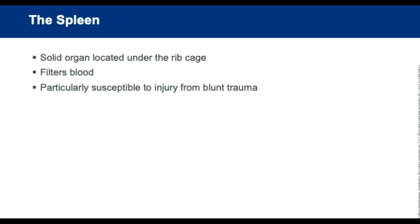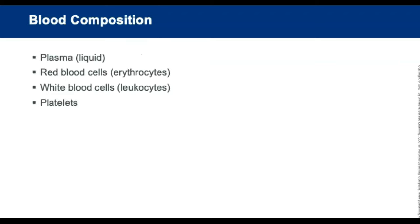The spleen is a solid organ located under the rib cage in the left upper abdomen. It filters worn-out blood cells, foreign substances, and bacteria from the blood. It is highly vascular and particularly susceptible to injury from blunt trauma. Blood is composed of four major components: plasma, red blood cells, white blood cells, and platelets.